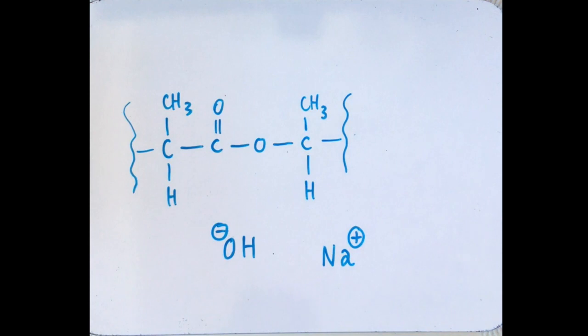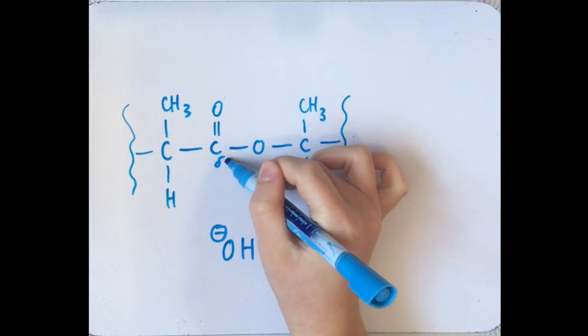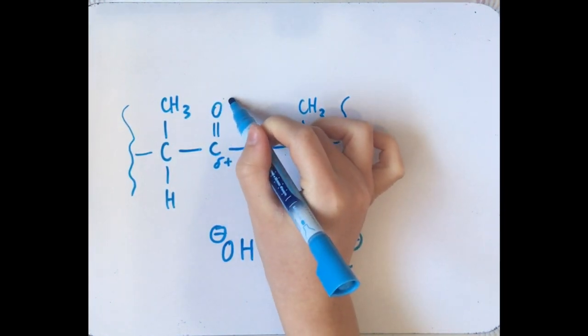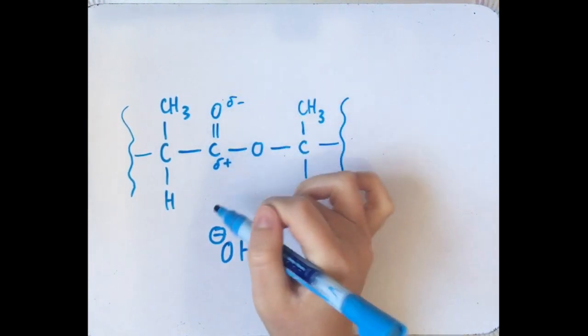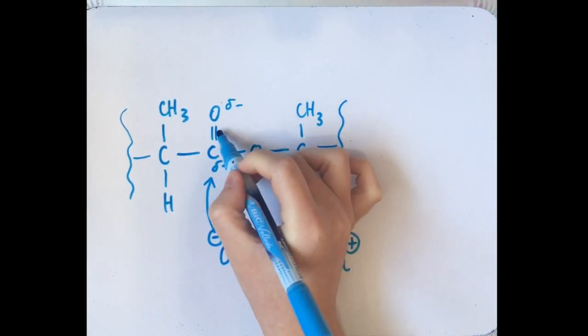In step one, the negative oxygen in the hydroxide ion acts as a nucleophile and is attracted to the delta positive carbon atom in the ester group. This carbon is delta positive because it is bonded to two electronegative atoms which pull electron density away from the carbon.